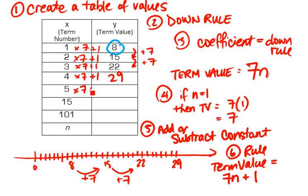I can continue the pattern for term 5. So 5 times 7 plus 1 is 36. 15 times 7 plus 1 - I'll have to use my calculator or I can do mental math - 105 plus 1 is 106. And 101 times 7 plus 1 is 707 plus 1 is 708.